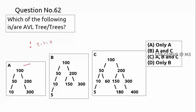For option B, looking at node 10: the left has one child, the right has zero, so one minus zero equals one — that's fine. But for another node, the left height is two and the right is zero, giving two minus zero equals two, which exceeds one. So option B is not an AVL tree.